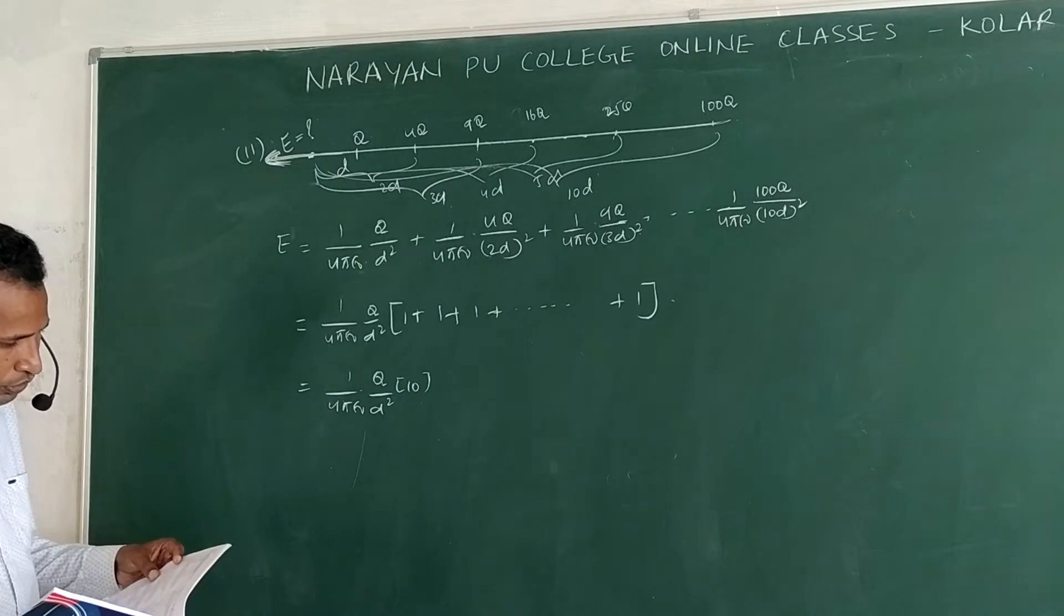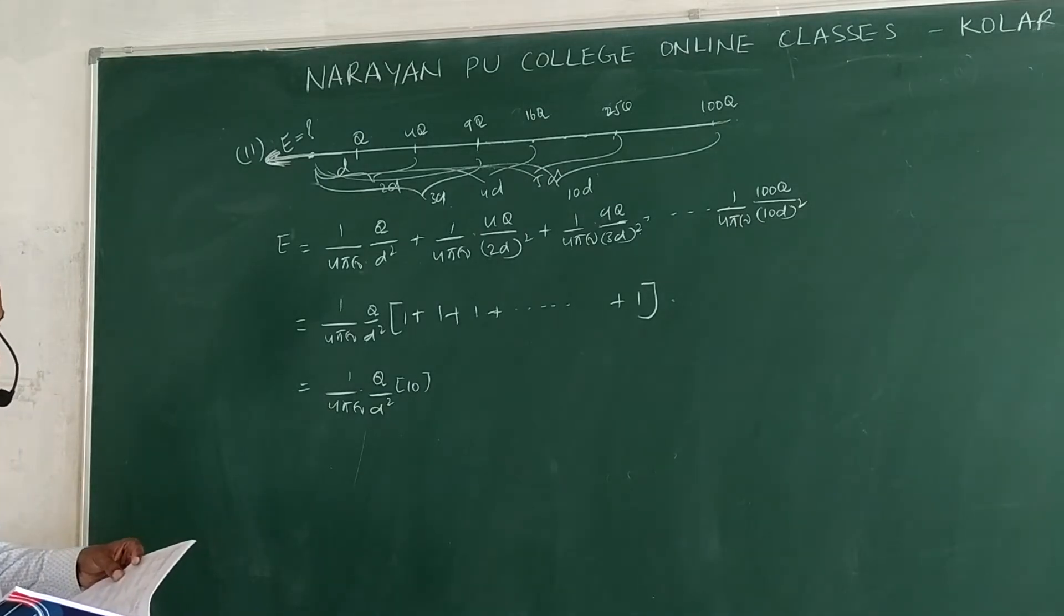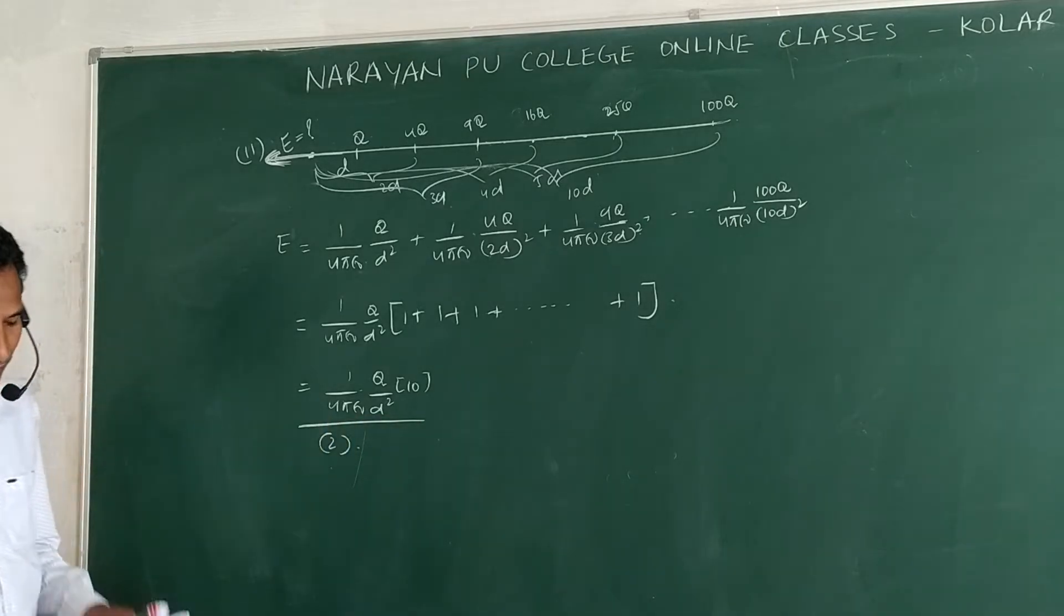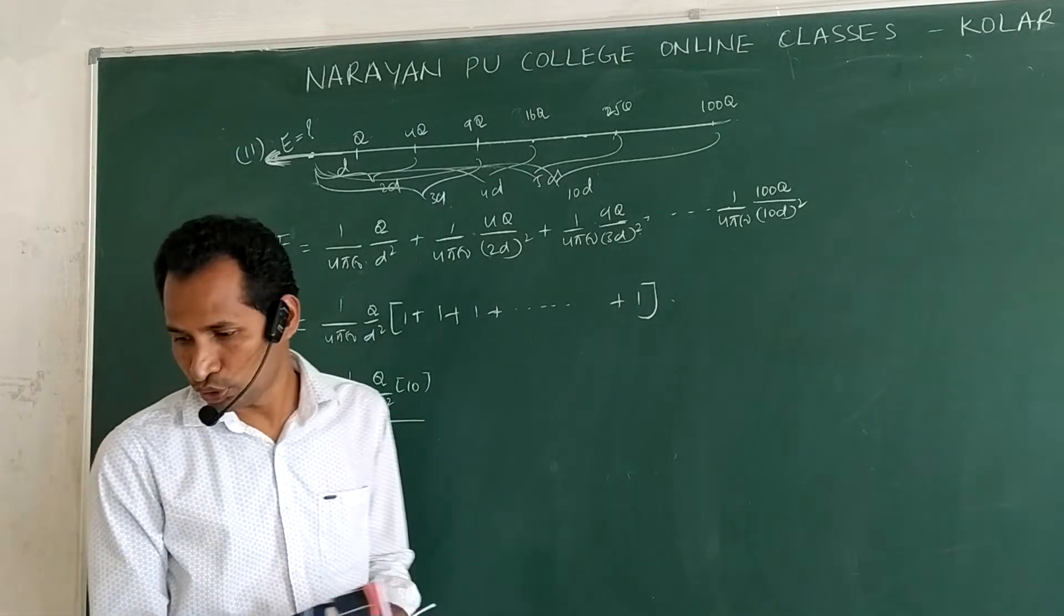So this we can write 1 by 4 pi epsilon naught Q by d square into 10. So the option is 1 by 4 pi epsilon naught 10Q by d square. Option 2 is correct.